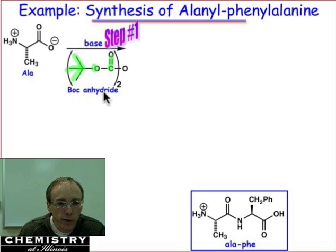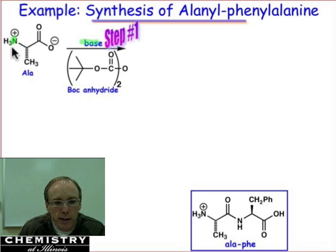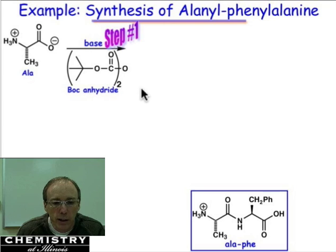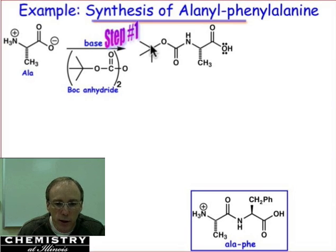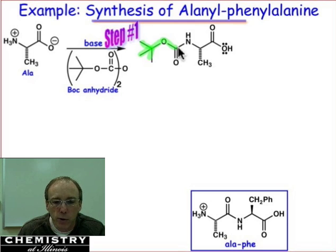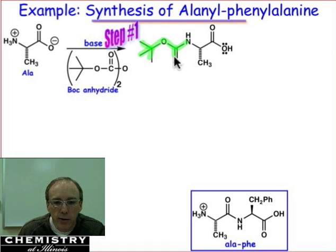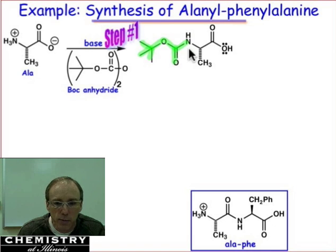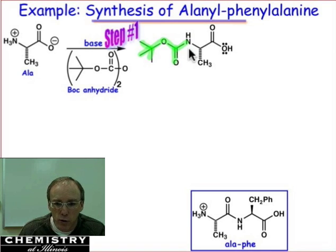Boc anhydride allows us to protect the amino group in the presence of a base. We deprotonate the amine, do addition to the carbonyl, and then the anhydride is eliminated as the leaving group. That puts on the t-butyl-oxycarbonyl group connected to the amino group — you'll need to know this structure. That amino group is now unactivated and will not react in a nucleophilic way, serving as a protected site. Now we can take the carboxylic acid on alanine and activate it.